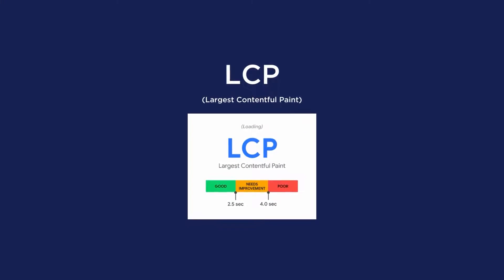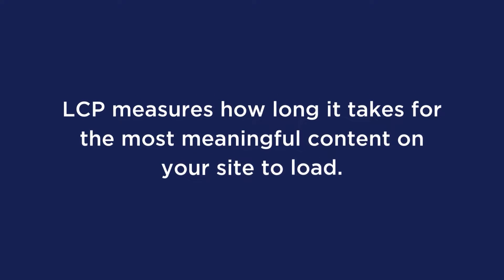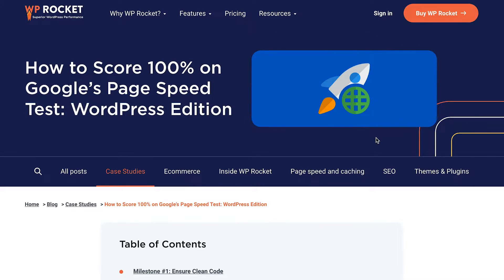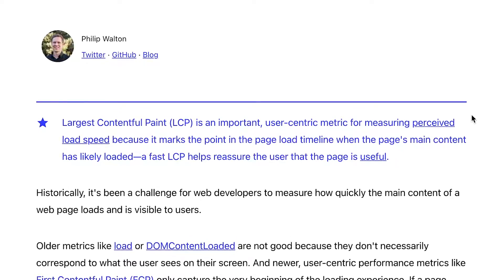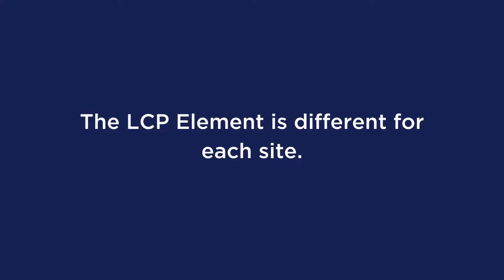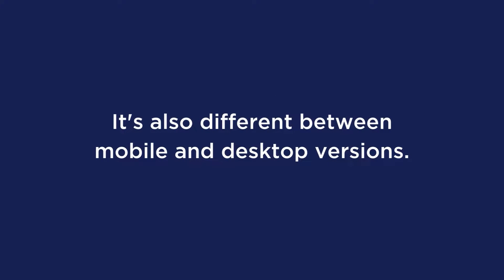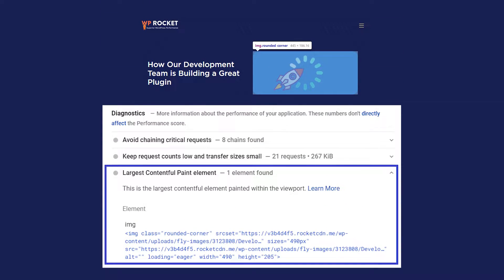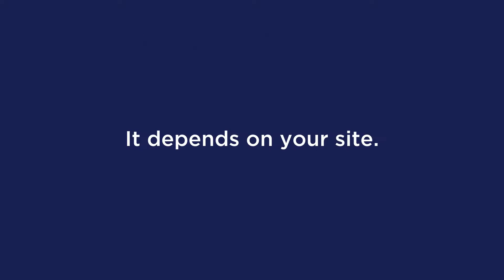Let's begin with LCP. Largest Contentful Paint, or LCP, measures how long it takes for the most meaningful content on your site to load. For most WordPress sites, that's usually the hero section or a featured image. According to Google, how long it takes for the page's main content to load affects how quickly users perceive your site to load. For example, if you land on a page and don't see the top image fully displayed right away, you'd probably be annoyed and even think about leaving. The LCP element is different for each site and also differs between the mobile and desktop versions. Sometimes it could be just an image, while other times it could be just text.